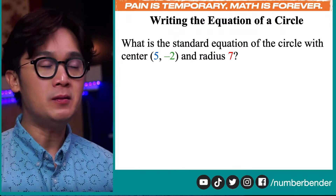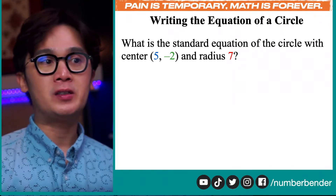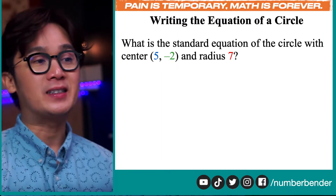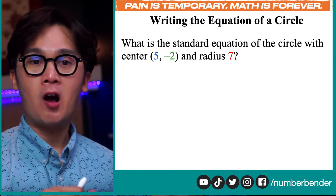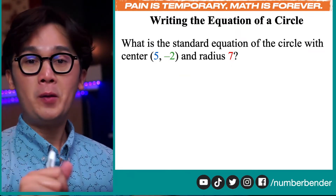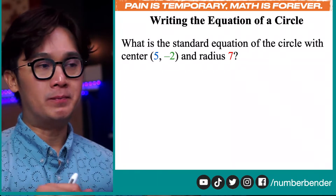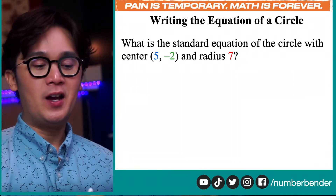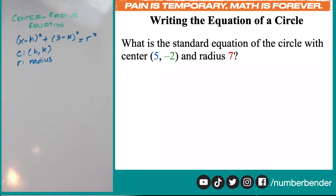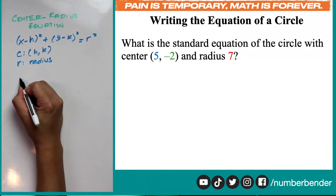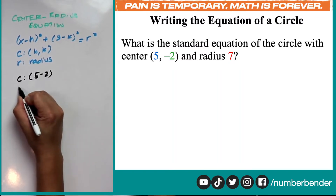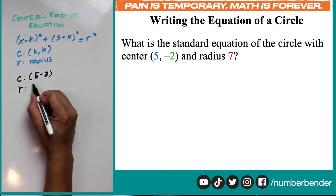This is our first problem. We need to write the standard equation of a circle with center at 5, negative 2 and radius 7. Notice that all the elements we need for our formula are given in this problem — the center and the radius. So to write the equation of this circle, it's going to be really quick because we know the center is 5, negative 2 and our radius is 7.